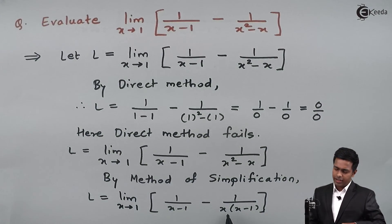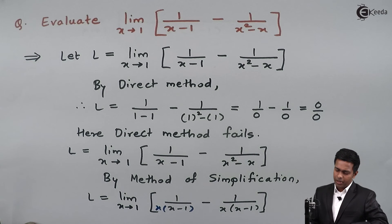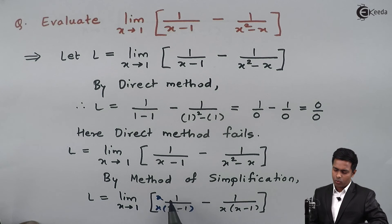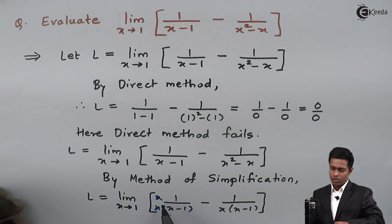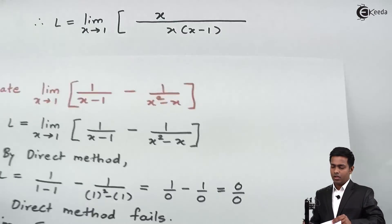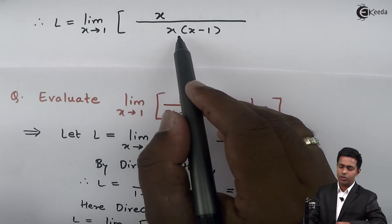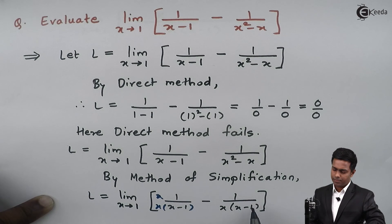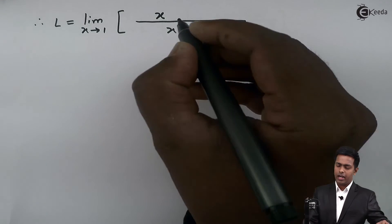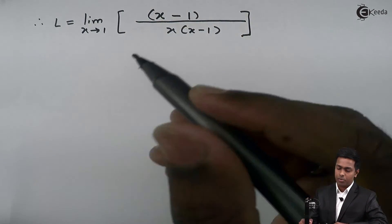Therefore L becomes the limit as x tends to 1 with denominator x into x minus 1. For the first term, I need to multiply numerator and denominator by x, so the numerator becomes x times 1 which is x, and the denominator becomes x into x minus 1. For the second term, the denominator is already x into x minus 1, which is our LCM, so no operation is needed and the numerator is just 1, giving minus 1. We now have x minus 1 in the numerator as well as in the denominator, so we cancel it.